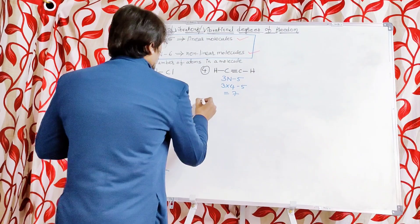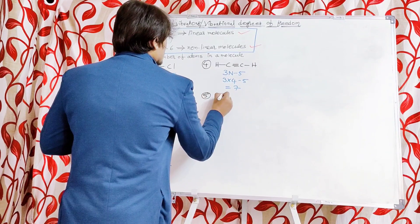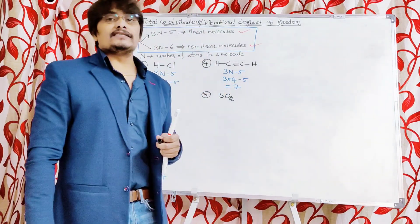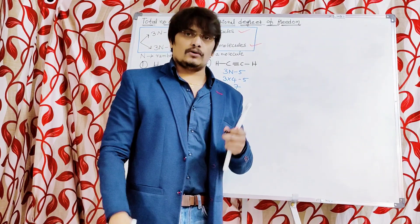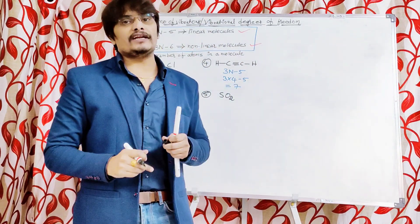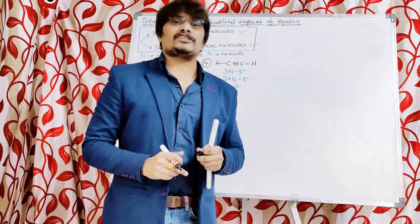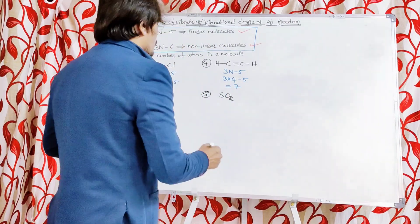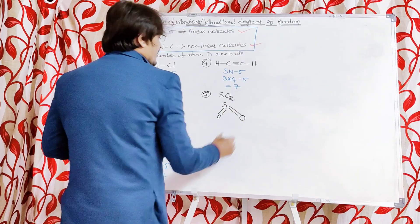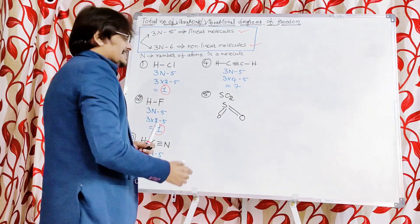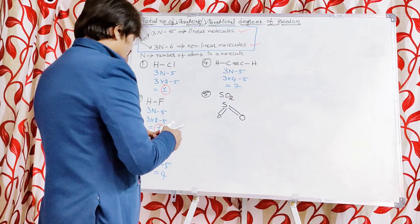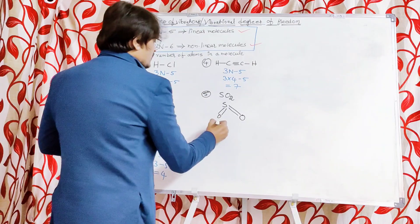Now let us take sulfur dioxide, SO₂. From the formula alone we cannot determine whether it is a linear or nonlinear molecule, so we must write its structure. The structure of sulfur dioxide is O=S=O with a bent (angular) shape. Based upon this structure, it is nonlinear — specifically angular in shape.